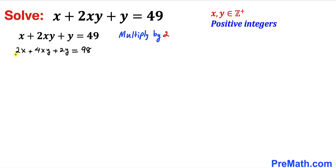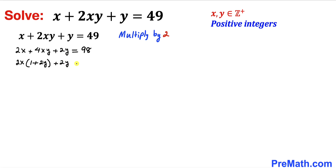Now we can see that 2x is common between the first two terms. So we are going to factor out 2x, and we are left with 2x times (1 plus 2y), plus 2y equals 98.